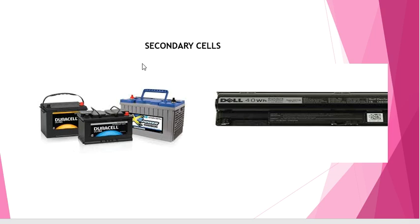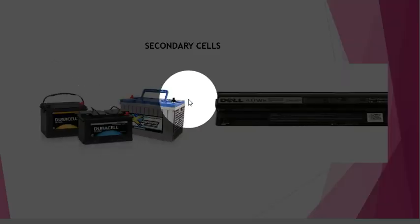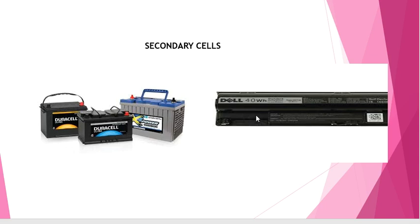Next, we will study the secondary cells. Secondary cells are also sometimes referred to as accumulated batteries. The difference is that these cells can be recharged by passing an electric current through them and can be used again and again. These are the secondary cells because they can be recharged again.